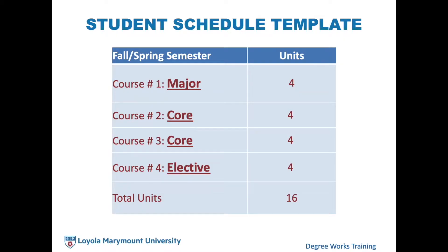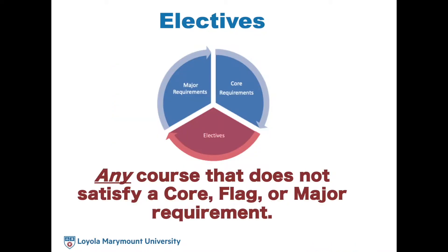A typical schedule includes a mixture of core, major, and elective courses. Core and major classes alone will not be enough to reach your 124-unit goal. This is where electives come in. An elective is any course that does not satisfy a core, flag, or major requirement. This is your opportunity to explore the liberal arts and to take courses that match your personal interests.